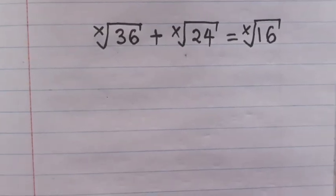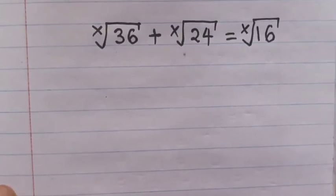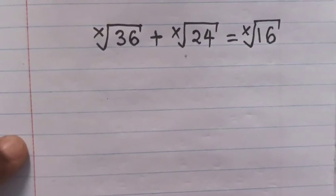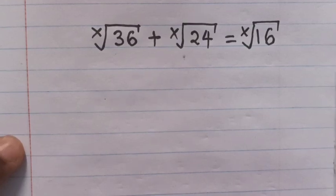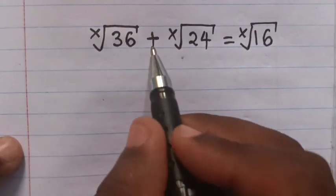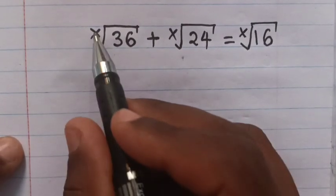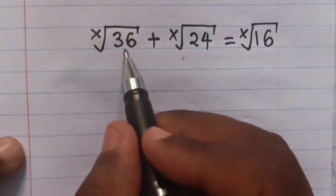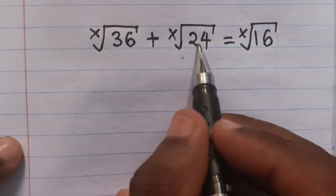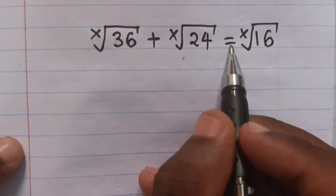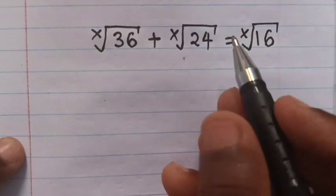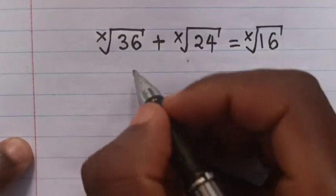Hello, most people are wrong to evaluate this question. You should use this trick to solve for x from 36 root of x plus 24 root of x equals 26 root of x.